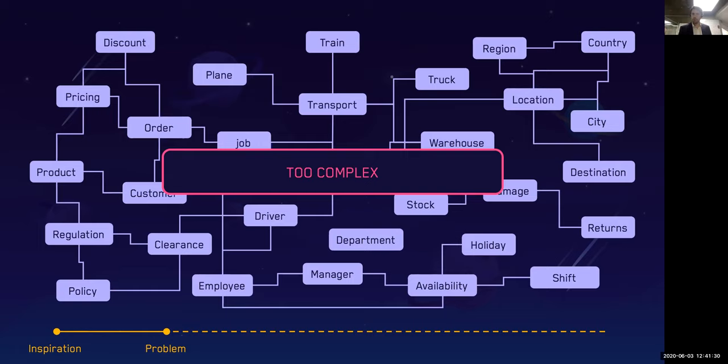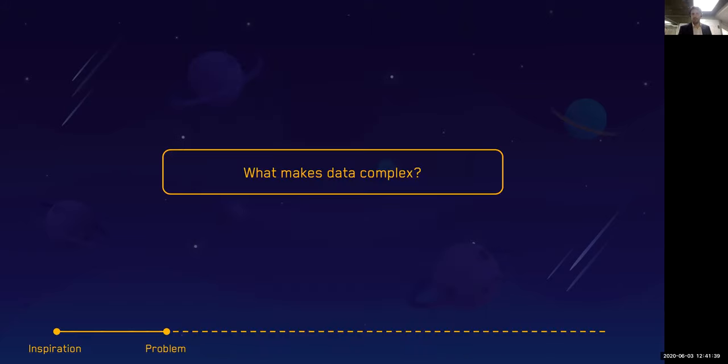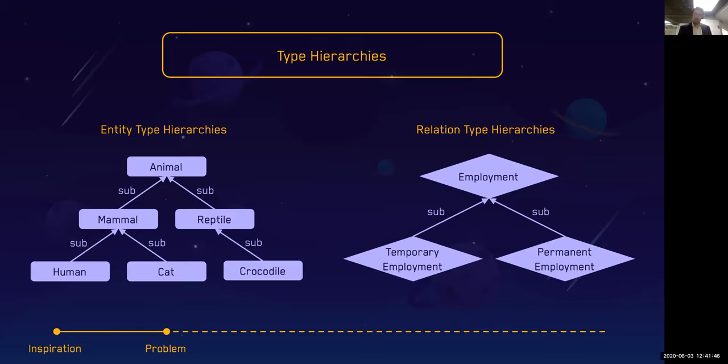It's not uncommon for us to write SQL queries that end up looking like this. So this complexity is inherent in a few different things. So what makes data complex? When we talk about complex data, there's a lot of different type hierarchies, and it's not just entity type hierarchies but also relation type hierarchies.